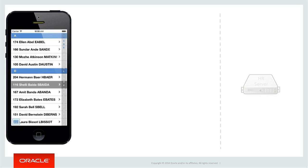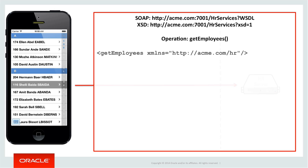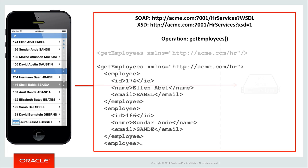In order for this application to work, it needs access to a HR server with the employee data, which is remote to the mobile device. Essentially, this screen wants to make a call to get all the employees. Luckily, the HR server already has a SOAP-based web service with an operation called get employees, which returns all our employees in an XML payload.